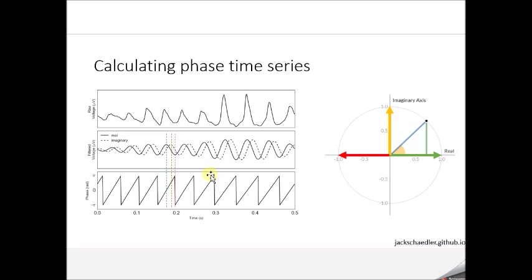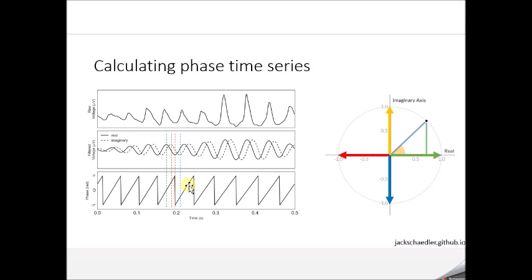If the real component is zero and the imaginary component is negative, the phase is −π/2. We perform this calculation for every time sample. Many samples lie between quadrants, producing a steadily increasing phase from −π to π across a cycle. Starting at the trough, the phase rises to 0 at the peak, then continues increasing to π as we descend, at which point it resets to −π to keep phase between −π and π.